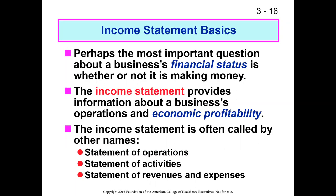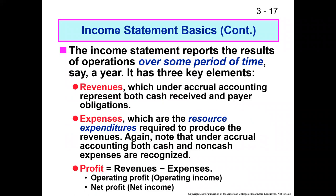The income statement provides information about the business's economic profitability — and you'll see why it's economic profitability and not necessarily cash. In a not-for-profit, the income statement is most often called a statement of operations, but can also be a statement of activities or a statement of revenues and expenses. All three are common in the not-for-profit world, but they all essentially refer to the same thing. I'm going to keep calling it an income statement — just toggle in your brain.